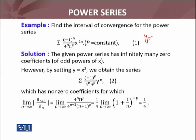We take y equals x squared. If I take this substitution, then this power series will turn out to be the same coefficient, but y raised to power n. Now this doesn't have infinitely many terms with coefficient zero. However, by setting y equals x squared, we obtain this series which has non-zero coefficients for which we can calculate